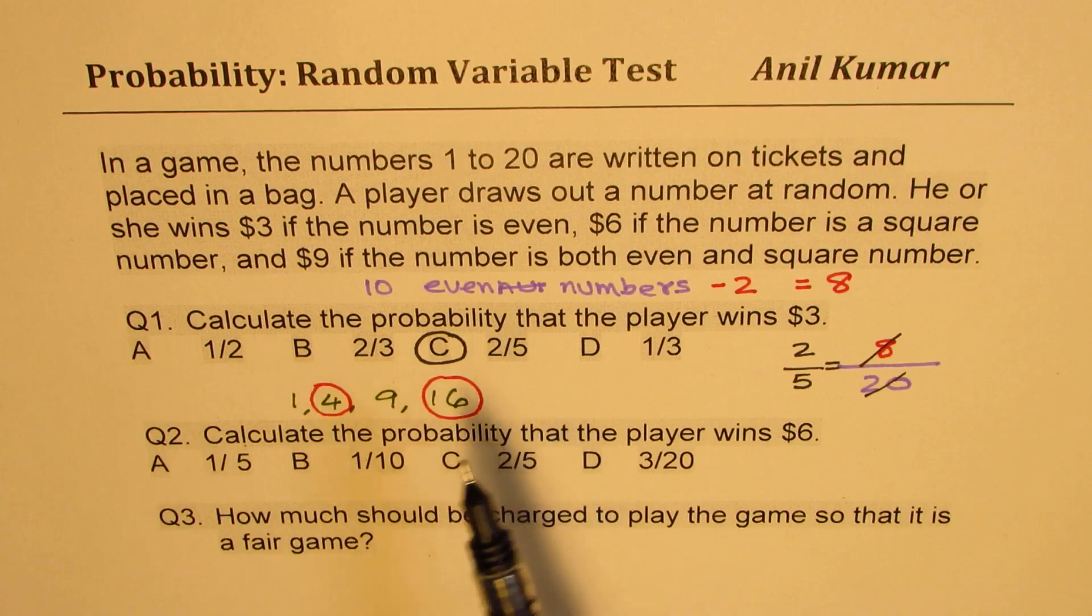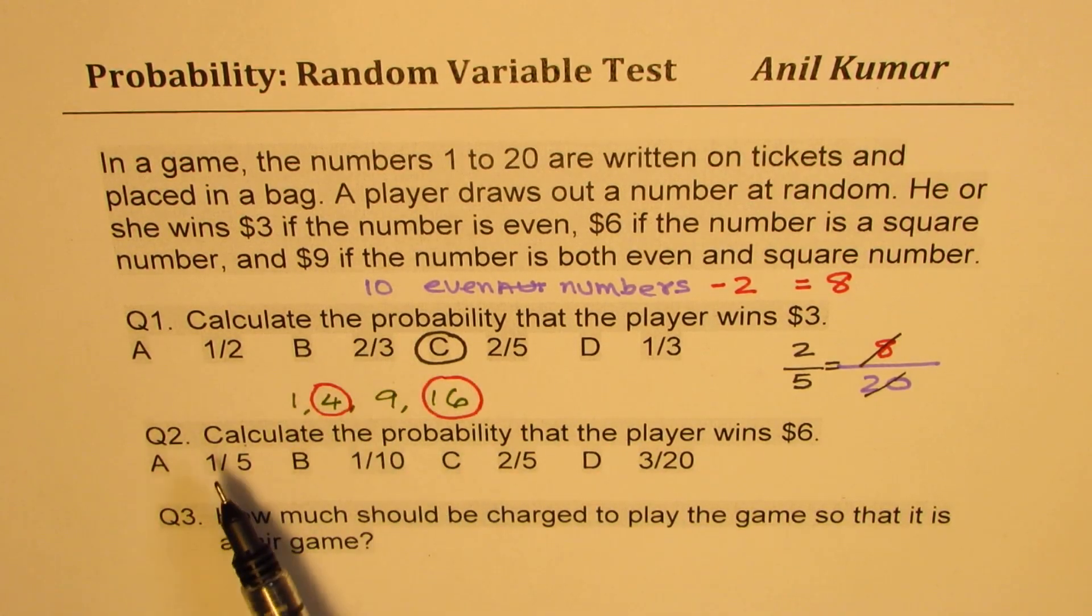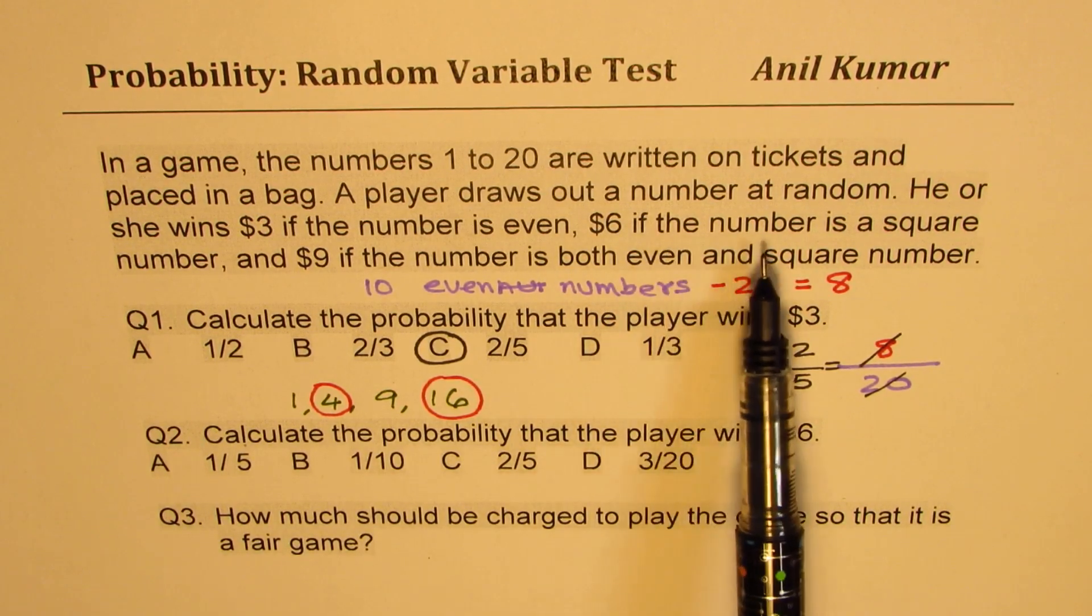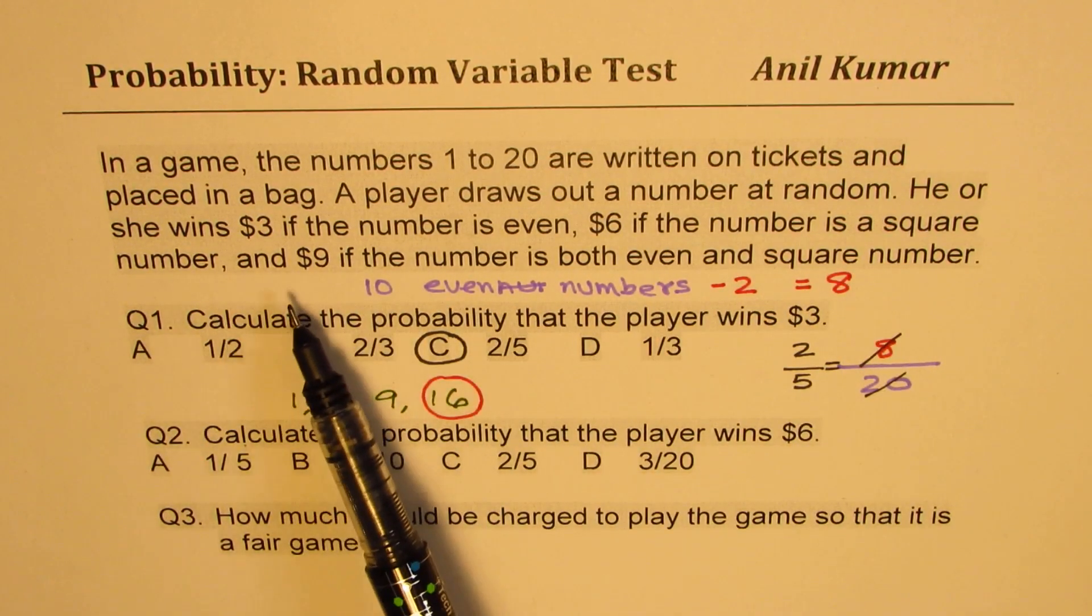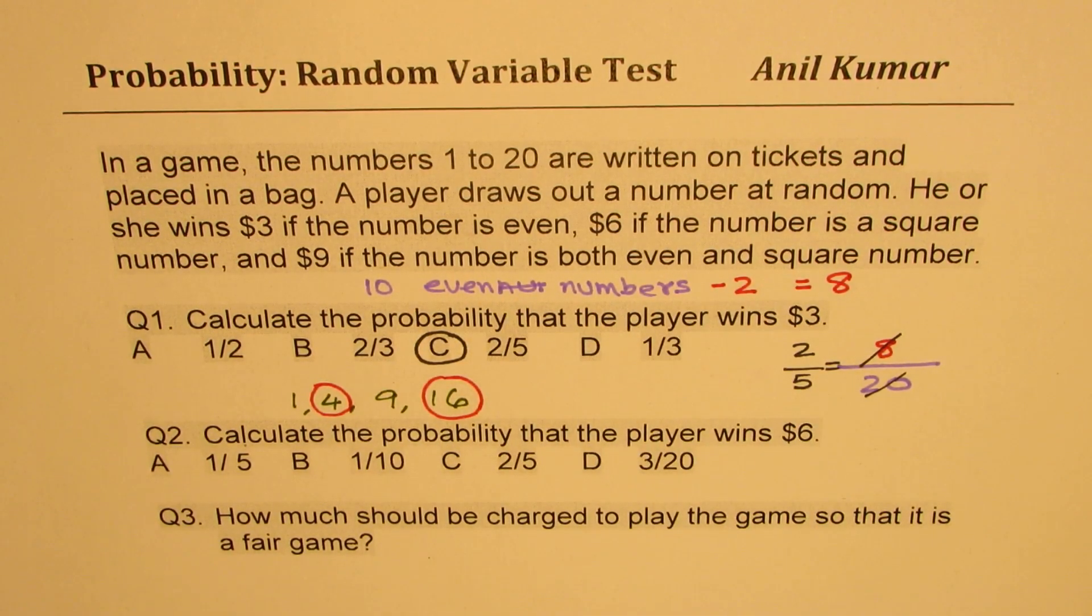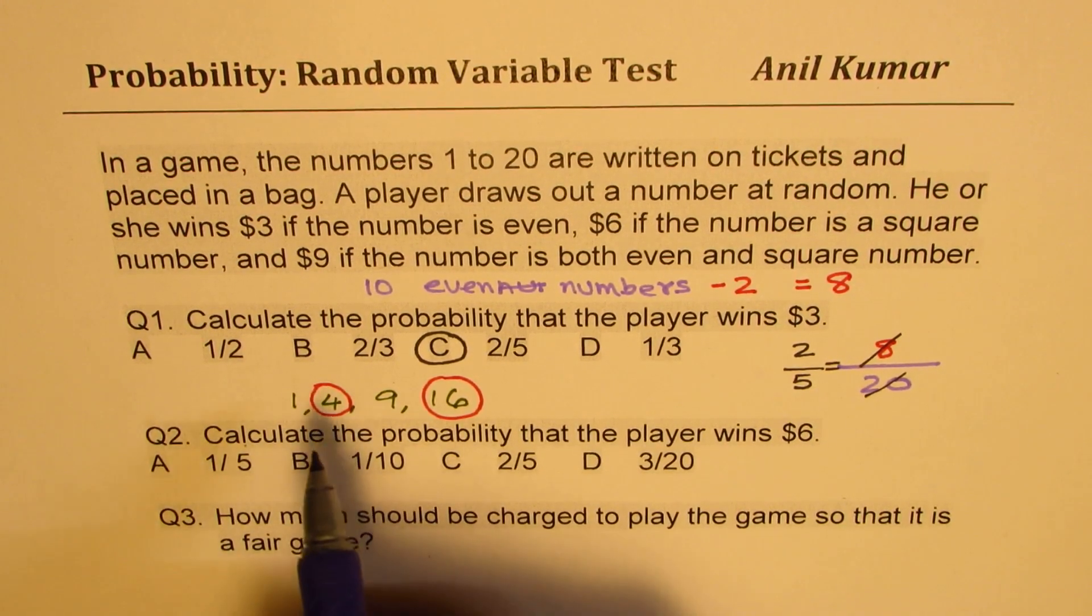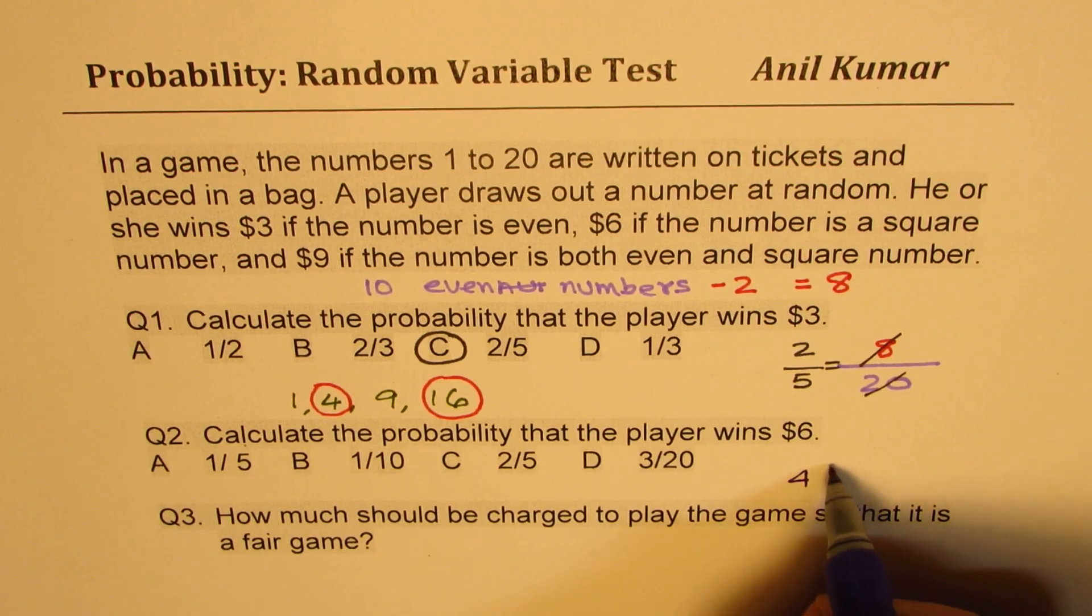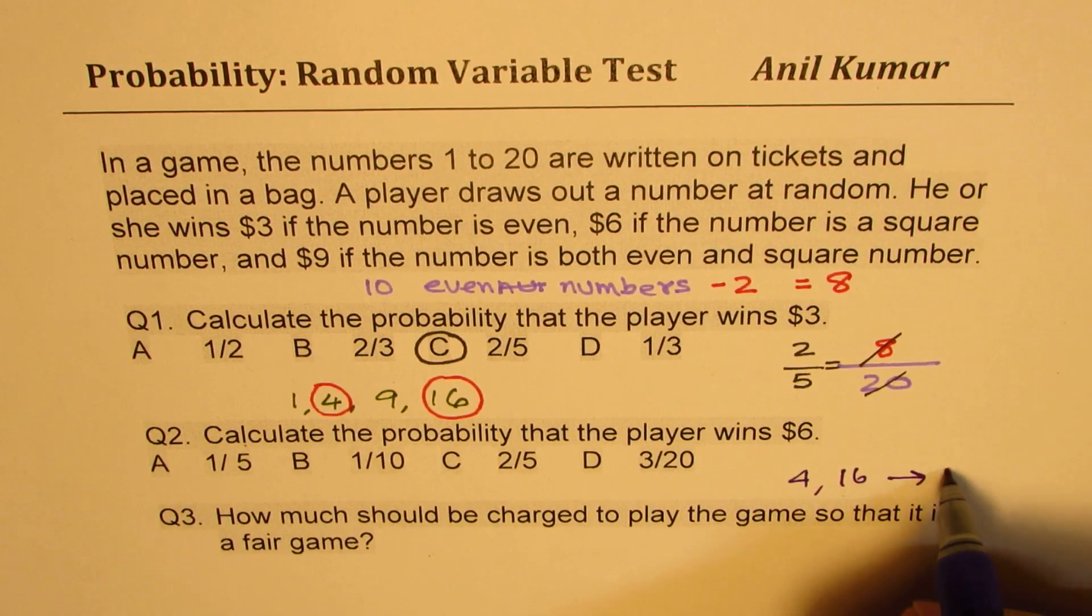Now, let's look into question number 2, which is calculate the probability that the player wins $6. Now, let's read it carefully. $6 if the number is a square number and $9 if the number is both even and square. So what do you notice here is that if you get 4 and 16, in that case, you win $9. So for 4 and 16, you actually get $9.